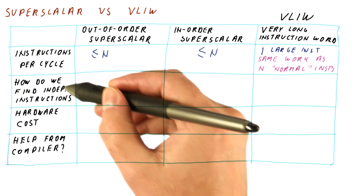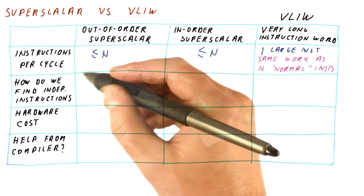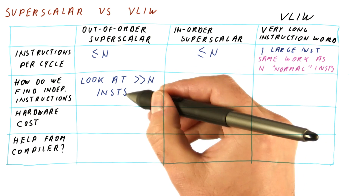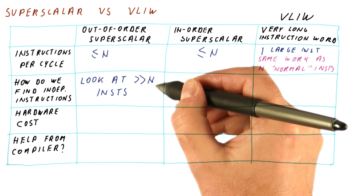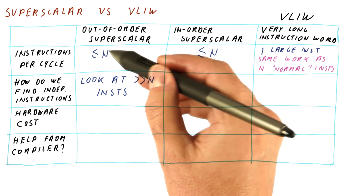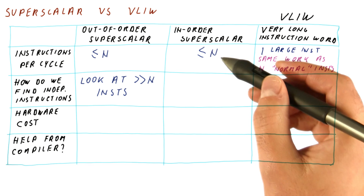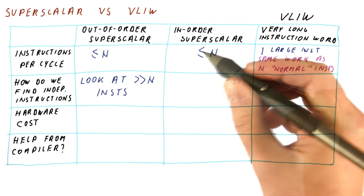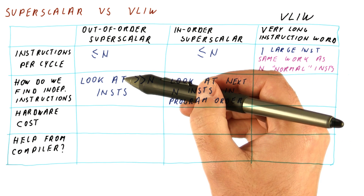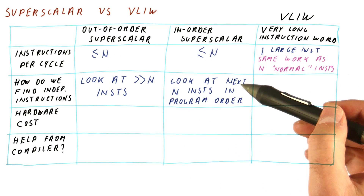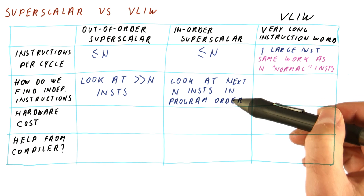In terms of how do we find independent instructions that we can do in a cycle, the out-of-order superscalar processor finds its N instructions by looking at much more than N instructions in its instruction window. In contrast, an in-order superscalar processor tries to execute up to N instructions per cycle by looking at only the next N instructions in program order, trying to see whether the next N instructions, or some subset of them, can be executed in program order in parallel.